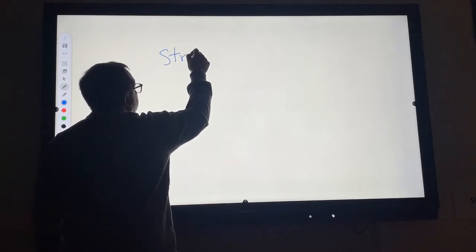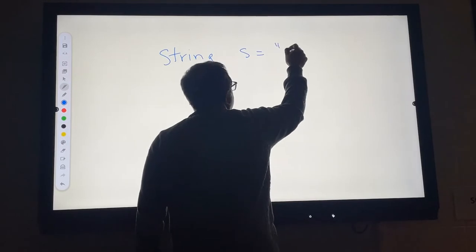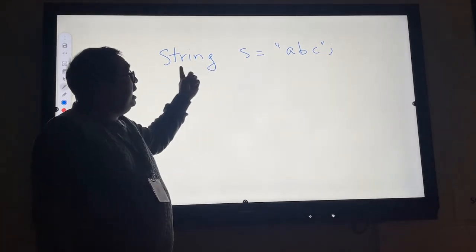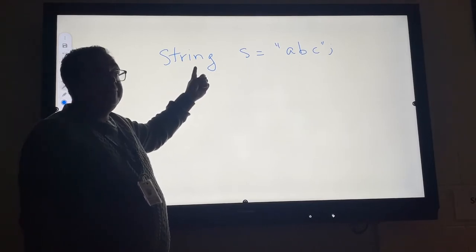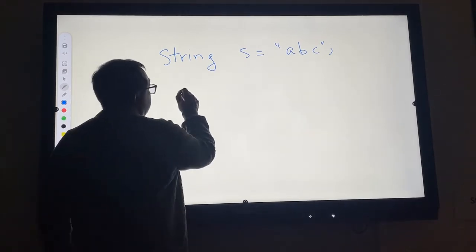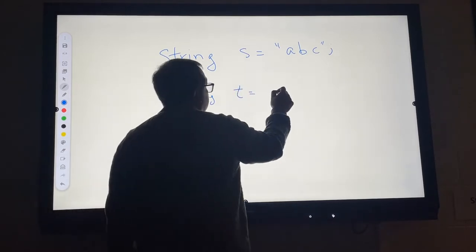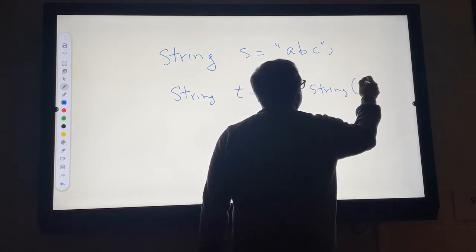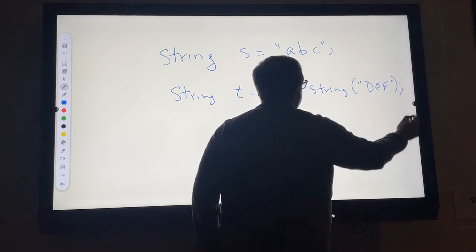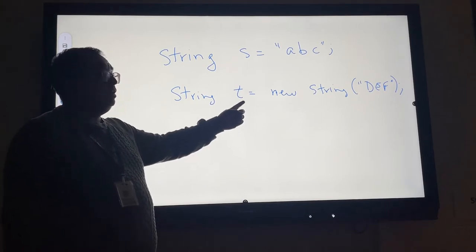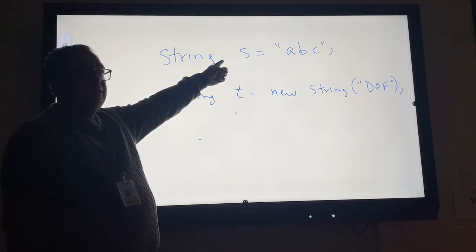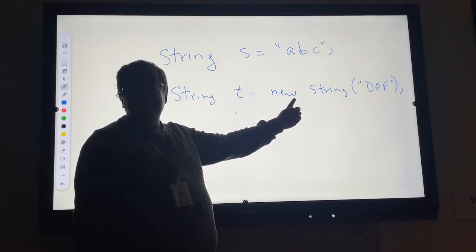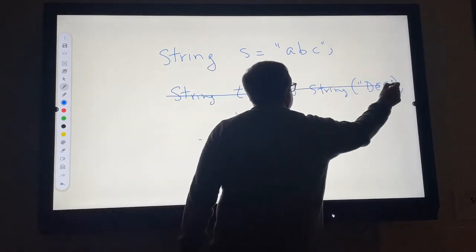So let's go string S equals ABC. Now, already you should be looking at this thinking, that's kind of weird. Usually when we create objects using a template known as a class, usually we use the keyword new. So you would expect that it would be like string T equals new string and then DEF or something like that. And indeed, you can make a string like this and we'll talk about that on Thursday, what the difference is. But most of the time we don't do that because it's a pain. We just go like that. So the Java compiler gives you a shortcut for building strings where you don't have to use the keyword new.